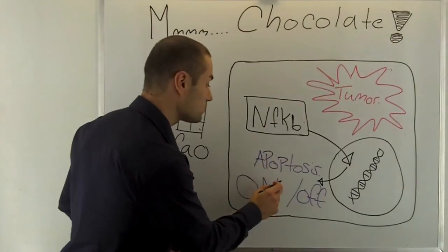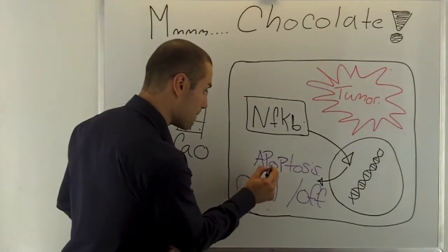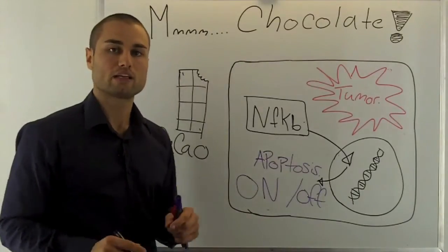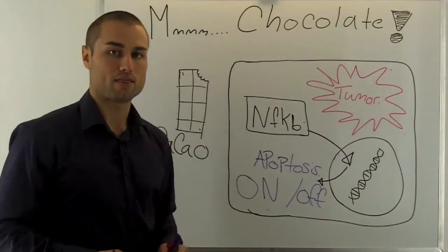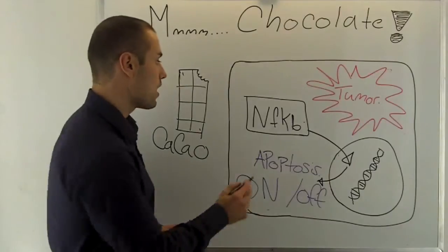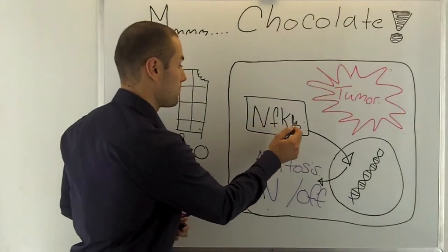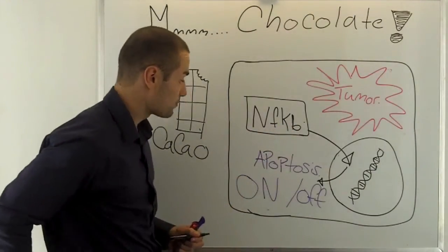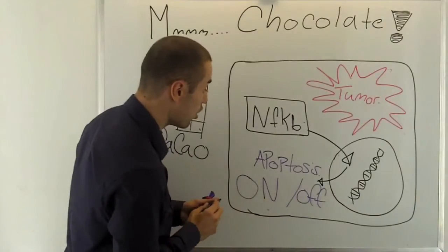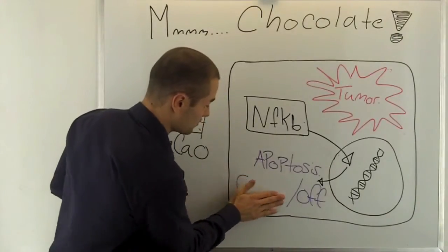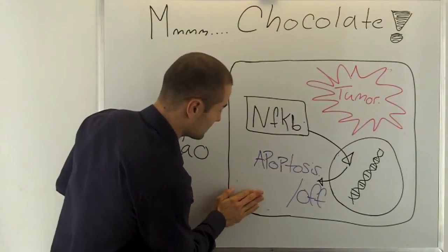So it cancels a procedure called apoptosis. Apoptosis stands for cellular death or suicide. So what nuclear factor kappa beta does is it stops suicide. So there is no apoptosis. So apoptosis right here is off. It's in the off position.